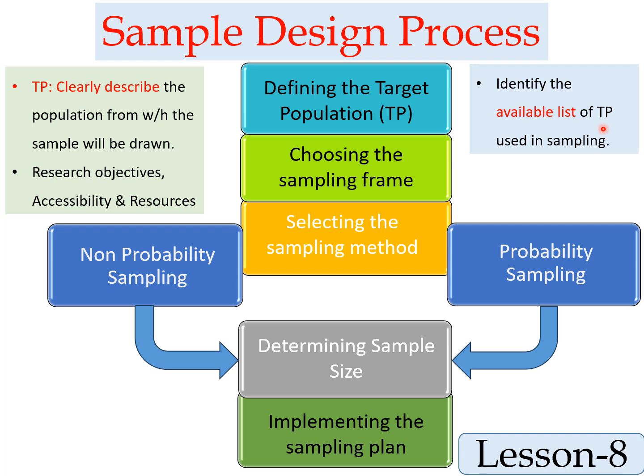For example, if we consider registered students as the population, the updated list of registered students — after removing missed entries and duplications — gives us the sampling frame. That is the updated, available list of the target population which is used in sampling.